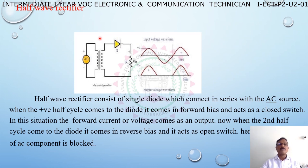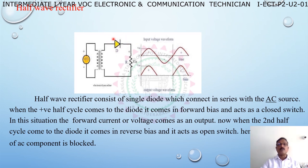In the circuit, we have a step-down transformer with an AC input of 230 volts 50 hertz. The transformer steps down the voltage to the required level, still in AC form. The output of the transformer is connected to a diode. The diode output is then connected to a resistor load.